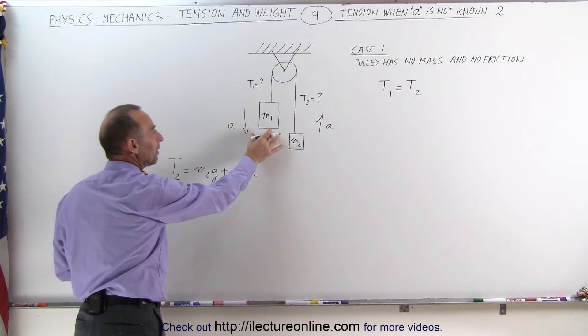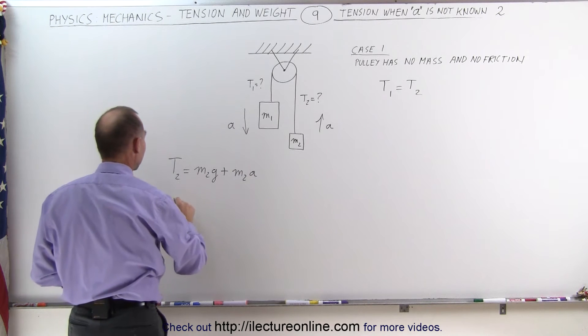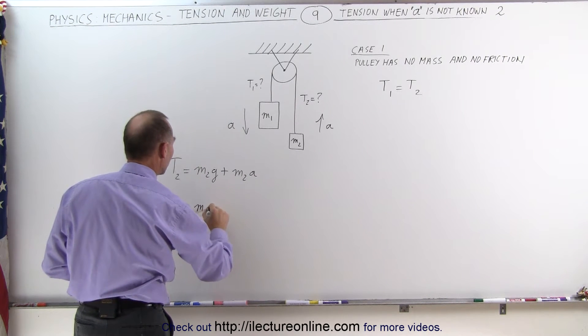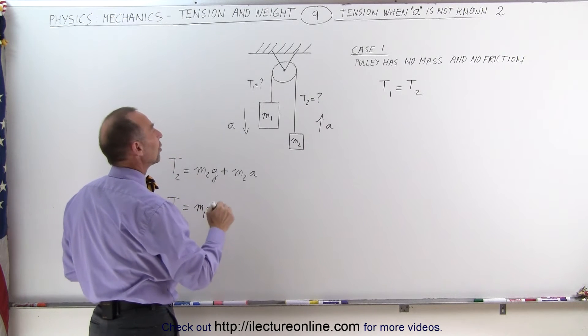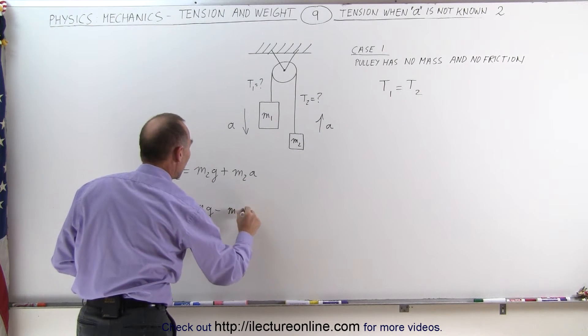For this object right here, M1, being the heavy object, it's going to accelerate downward. We can then say that T1 is equal to the weight of that object, which is M1G, minus the force required to accelerate it downward, which is M1A.